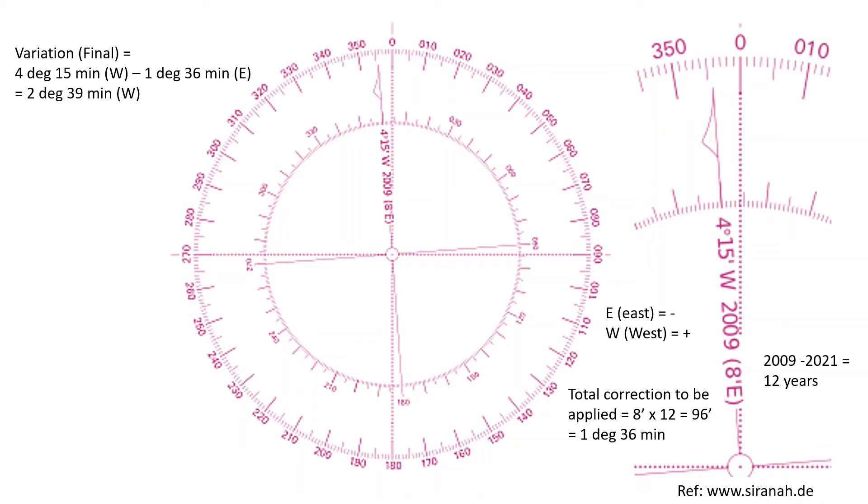That I have calculated from 2009 to 2021 which was 1 degree 36 minutes, and because here it is east and my variation value is west I will subtract it. So if it was west, if both were west I would have added it. So if it's west and east I will subtract it, and the resultant variation I get is 2 degrees 39 minutes west.